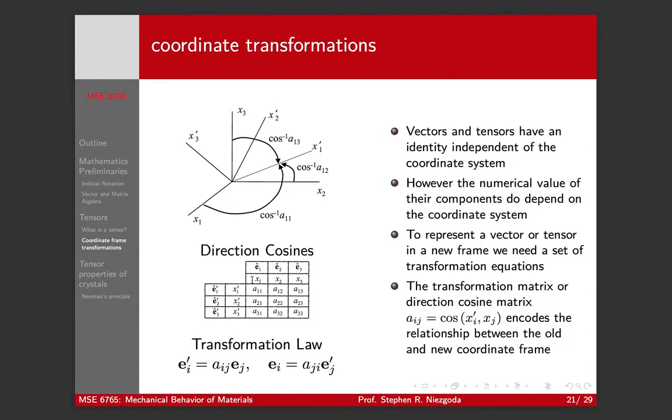So we define the direction cosine matrix. I would write up here 1 0 0, 0 1 0, 0 0 1, and down here I would write this vector e-hat 1 prime in terms of x1, x2, and x3. This is going to have some value, and then we simply take the dot products between all of these and fill out this direction cosine matrix.